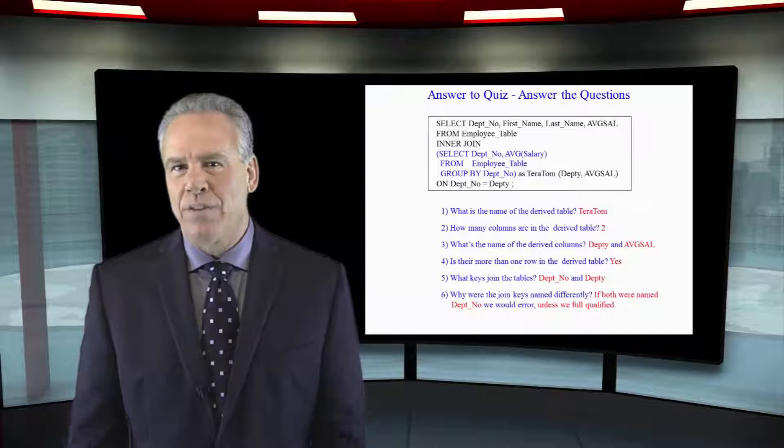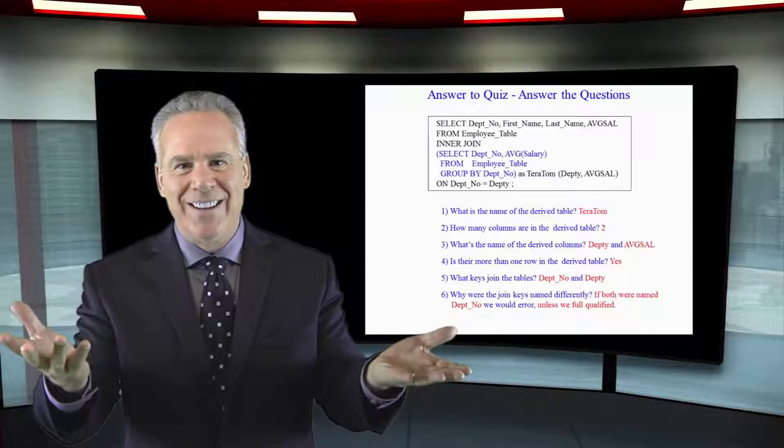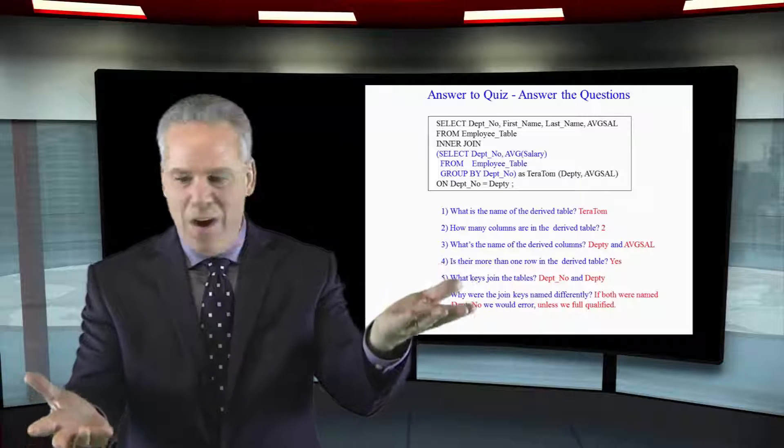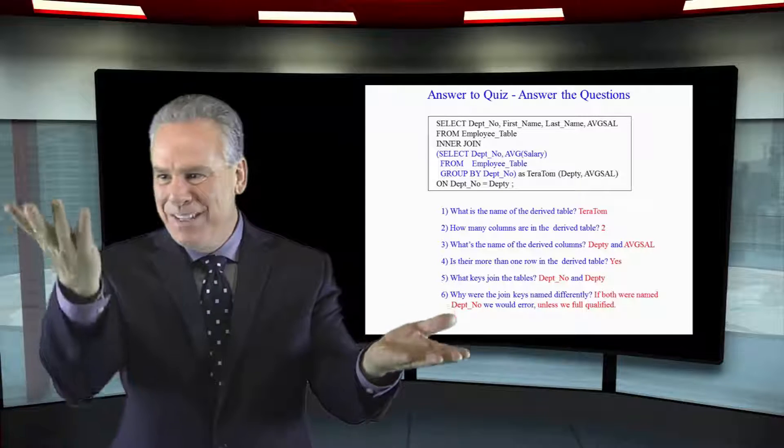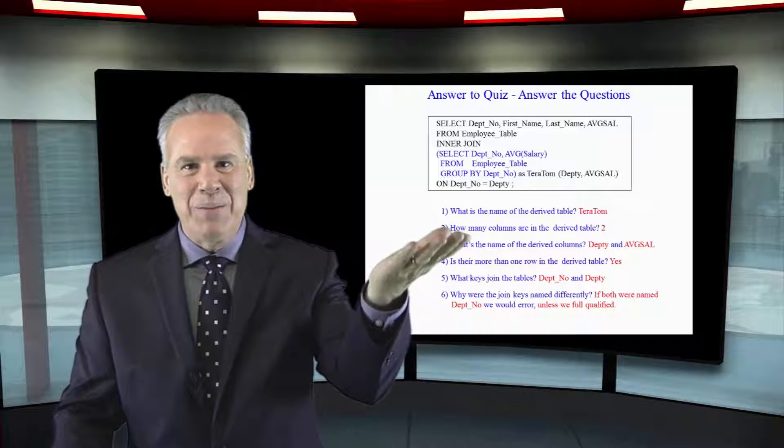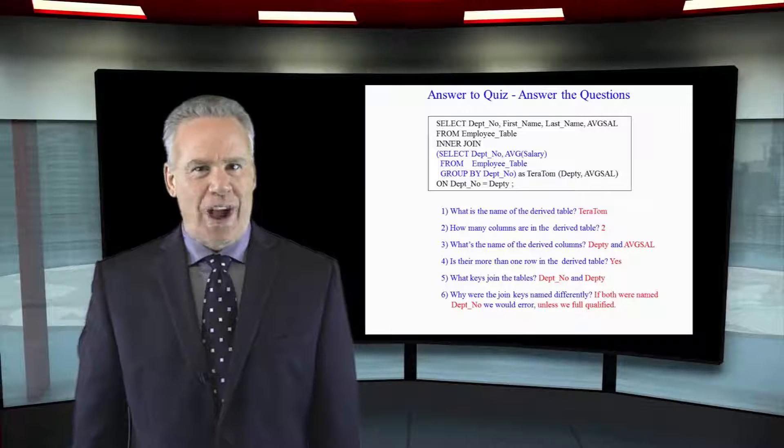Why did we name the keys differently? Because now we don't have to fully qualify with the table names because both Depno and Deptee are in different tables. Deptee's in the derived, Depno's in the employee. That's the reason we did it. Great job.